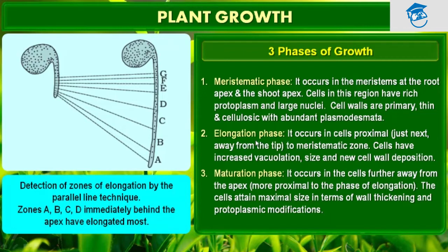Then comes the elongation phase. It occurs in cells proximal — meaning just next away from the tip. Zones A, B, C, D immediately behind the apex have elongated the most, while G, F, E represent the meristematic zone. It occurs in cells proximal to the meristematic zone. Cells have increased vacuolation, and because of the larger vacuole, it helps in the stretching of meristematic cells, entering them into the elongation phase.